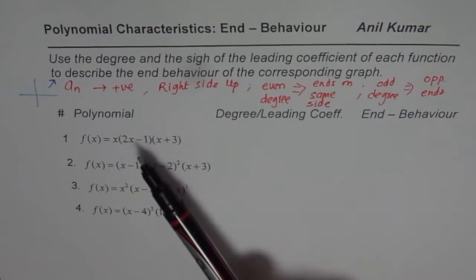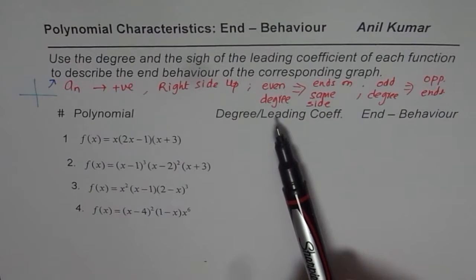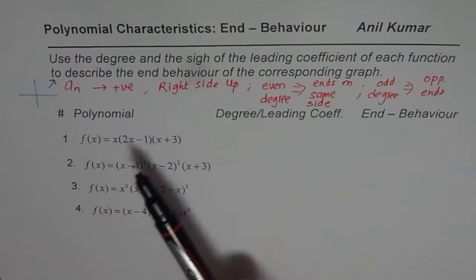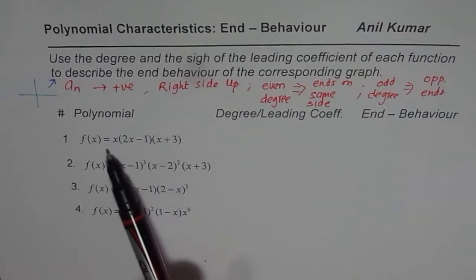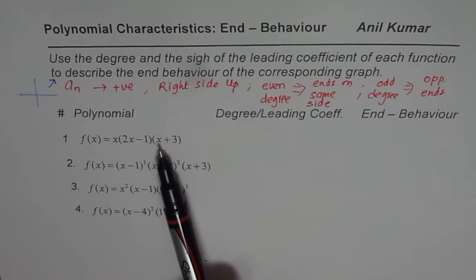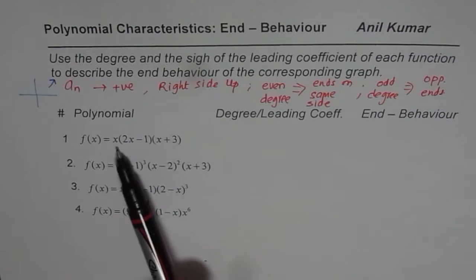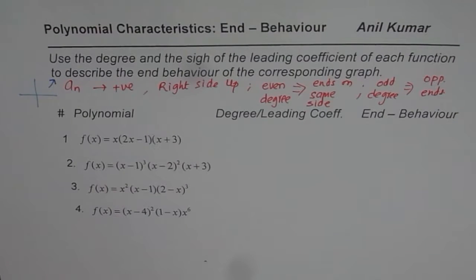This really helps us find end behavior from degree and leading coefficient. Here we have an additional challenge: the equations are not given in standard form but in factored form. So you have to multiply to find the leading term and its sign — that is very important.